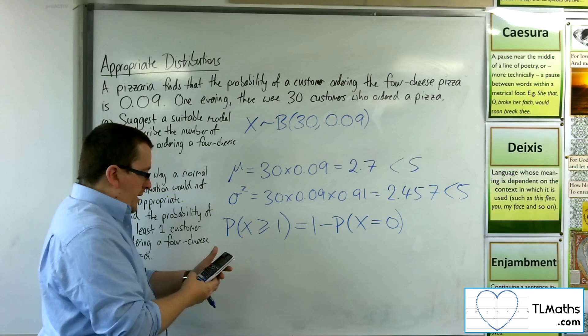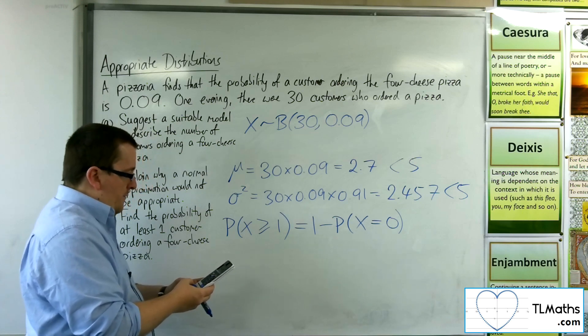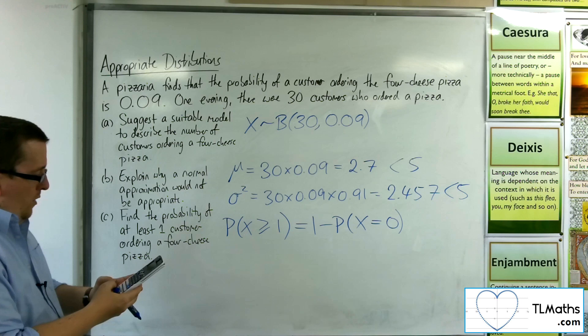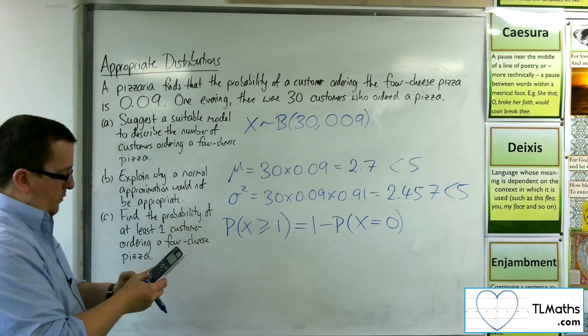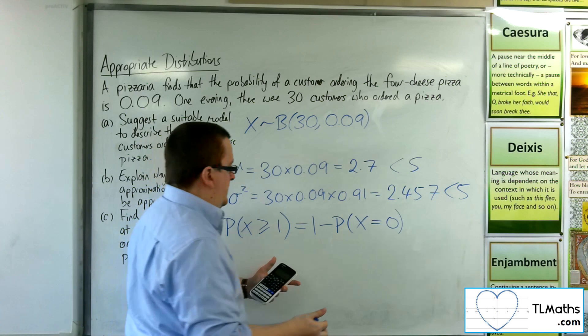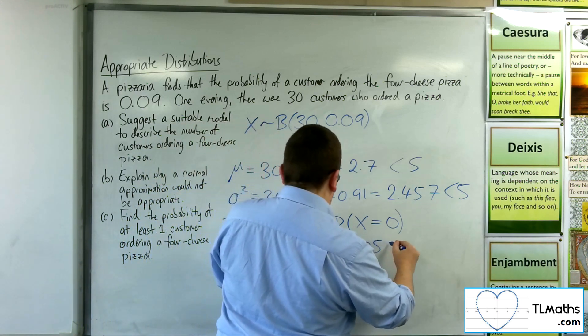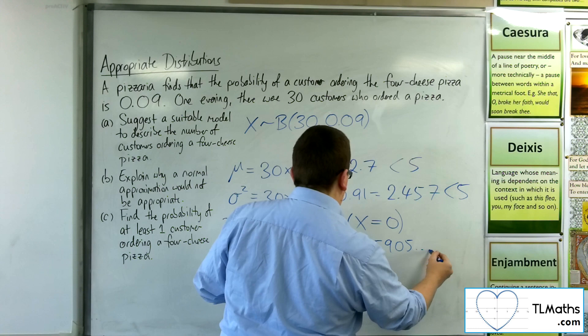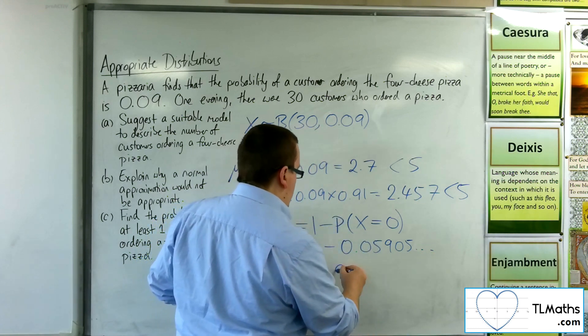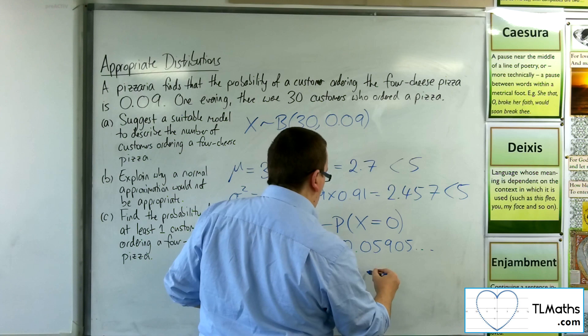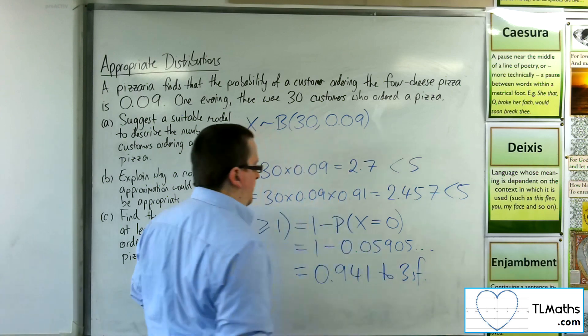So going to distribution and binomial pd and then variable. If I want x to be 0, I want n to be 30 and probability 0.09. Then this is 1 take away 0.05905, etc. And so that's 0.941 to 3 sig fig.